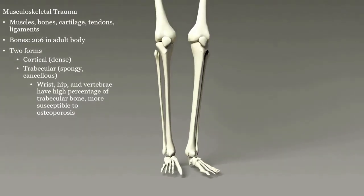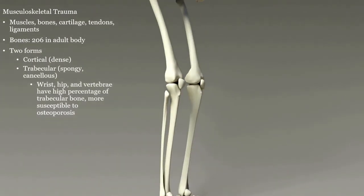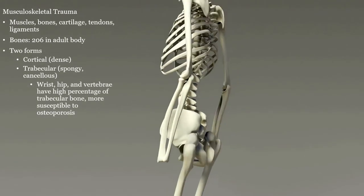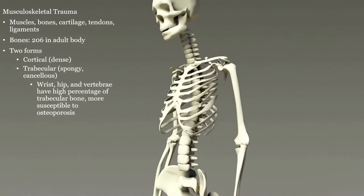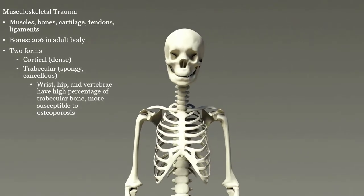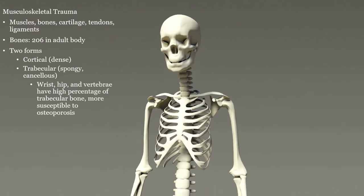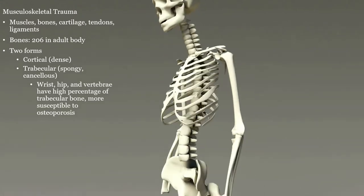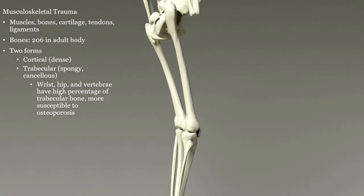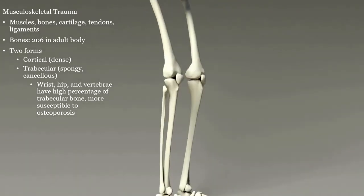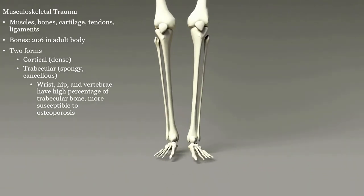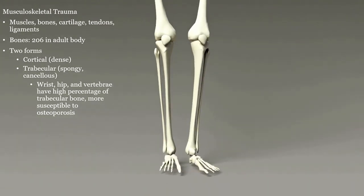The skeletal system is made up of roughly 206 bones. Some may have more or less due to pathological conditions or genetic variations. Bones can be dense or cortical, and they can be spongy or trabecular. This is important to review as the spongy or trabecular bones may be more susceptible to osteoporosis.